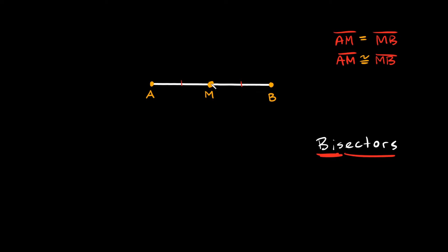Segment bisectors are basically just anything that splits a segment in half. Here, a point is a segment bisector because it intersects segment AB in the middle. We could also use a ray — a ray MC, for example, is a segment bisector because it crosses through the center of segment AB.